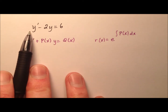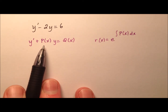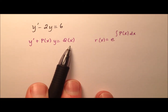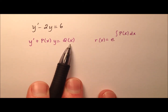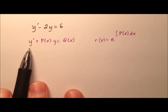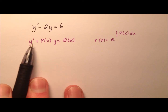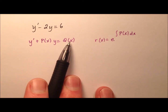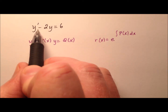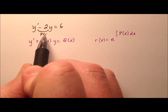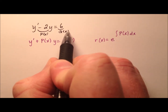We consider this linear because it can be written in the form y prime plus p of x times y equals q of x, where p of x and q of x are just functions in x, and y prime is by itself. The equation given in the first example is already written in this linear form. So the p of x function is going to be negative 2, and the 6 is going to be our q of x.